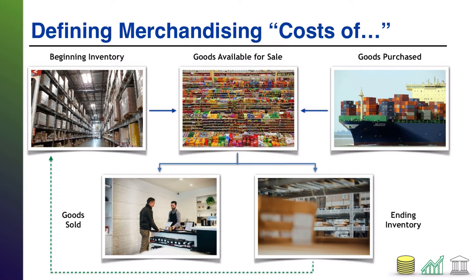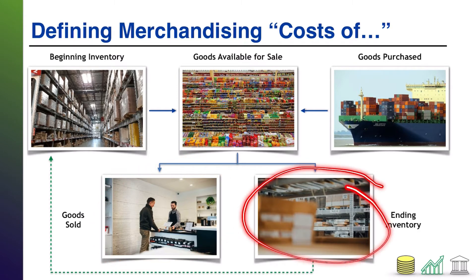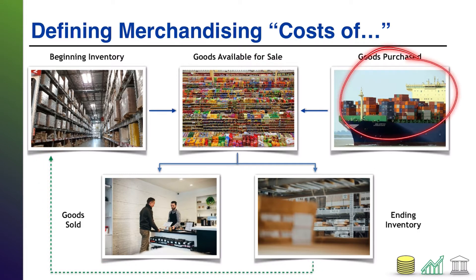That's the inventory that is available for a customer to purchase from you. You have some, you buy some — that creates everything in your possession, which customers then have available to buy. From that point, either one of two things happens: either a customer does indeed buy your good, in which case you don't have it anymore, or a customer doesn't buy your good and it goes back into the warehouse as your ending inventory. That ending inventory then becomes the inventory you start with during the next period, you buy more, and the cycle keeps repeating. This is the life cycle of inventory in a merchandising company.